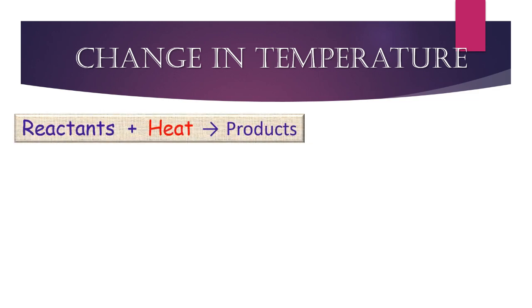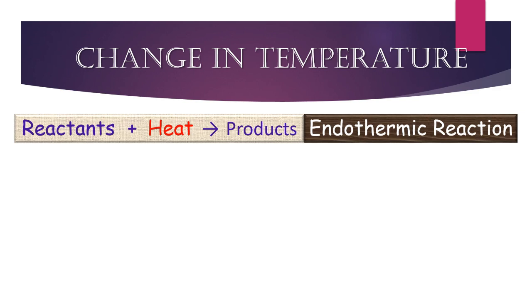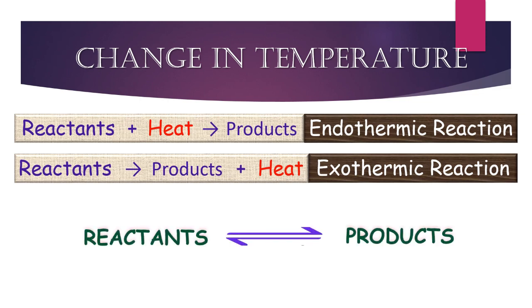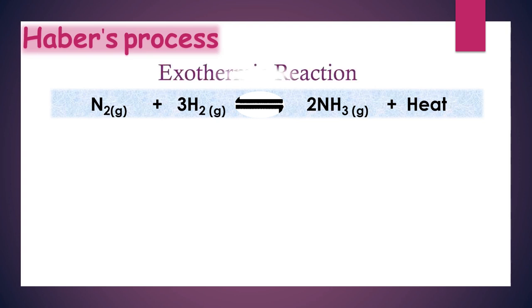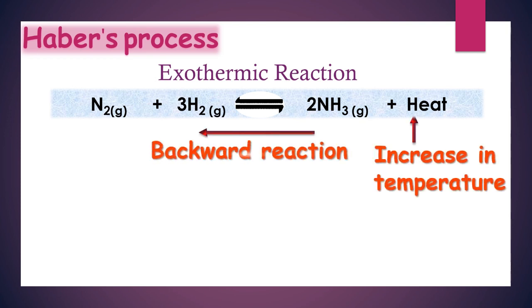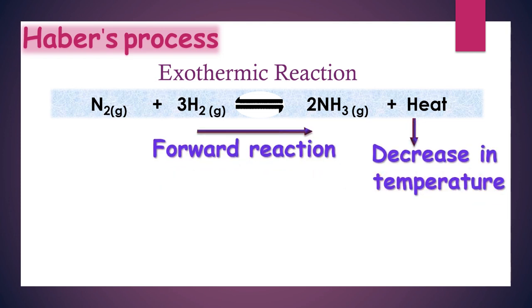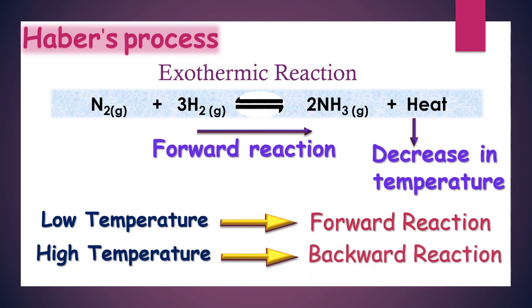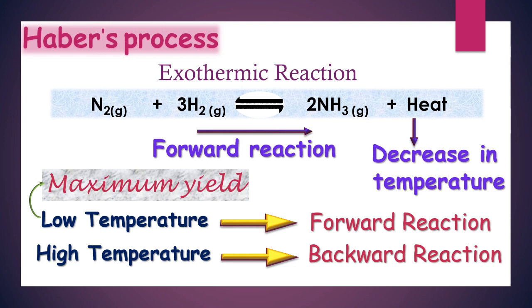Let's study how temperature change can affect dynamic equilibrium. Some reactions take place by absorbing heat energy and are called endothermic reactions, while others release heat and are known as exothermic reactions. In a reversible reaction, if the forward reaction is exothermic, then the reverse reaction would be endothermic, and vice versa. The Haber's process for the formation of ammonia involves a reversible exothermic reaction. If we treat heat as one of the products, an increase in temperature would favor the backward reaction, and a decrease in temperature would favor the forward reaction. Hence, in the Haber's process, low temperature favors the forward reaction and temperature of the reaction mixture is kept low to increase the amount of product.